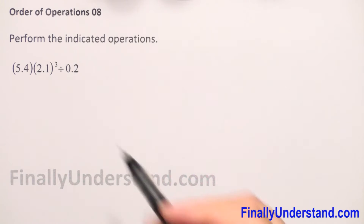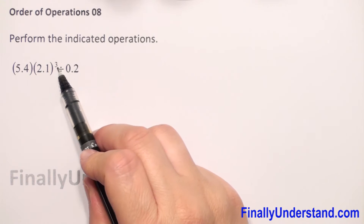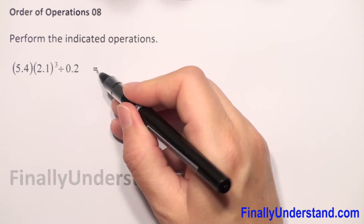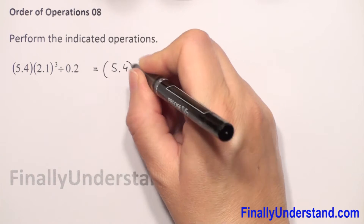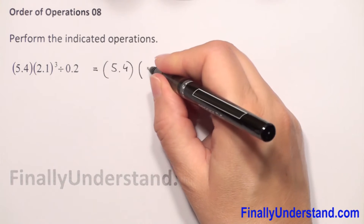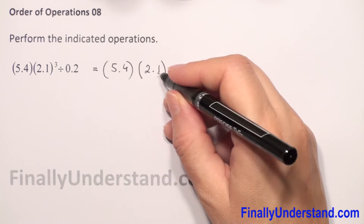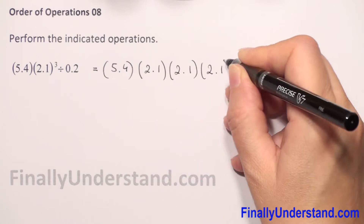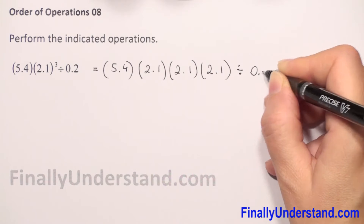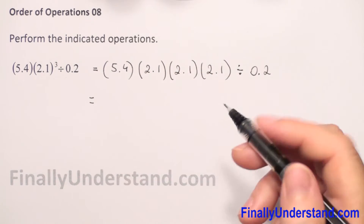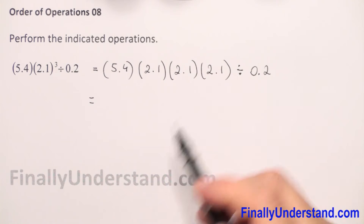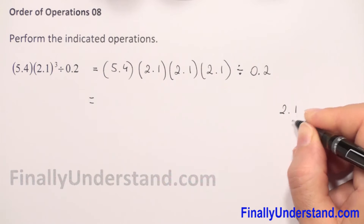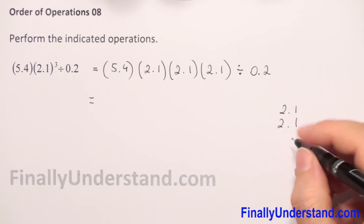In this example, inside the parentheses we don't have any operations, so we have to go to the power. We have to write 2.1 to the third power. So let me rewrite our example: we have 5.4 — when we don't have any sign it's always multiplication — and we have 2.1 to the third power. So this is 2.1 times 2.1 times 2.1, divided by 0.2.